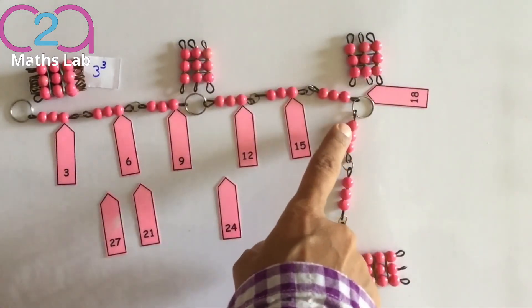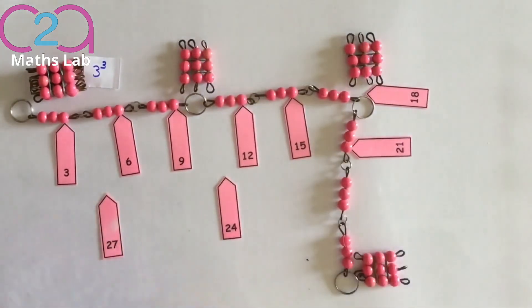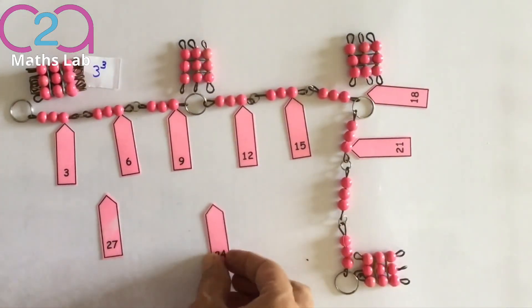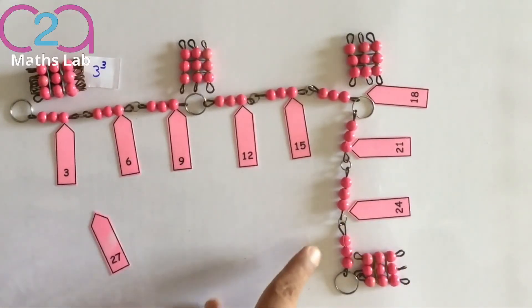19, 20, 21, 22, 23, 24, and then 25, 26, 27.